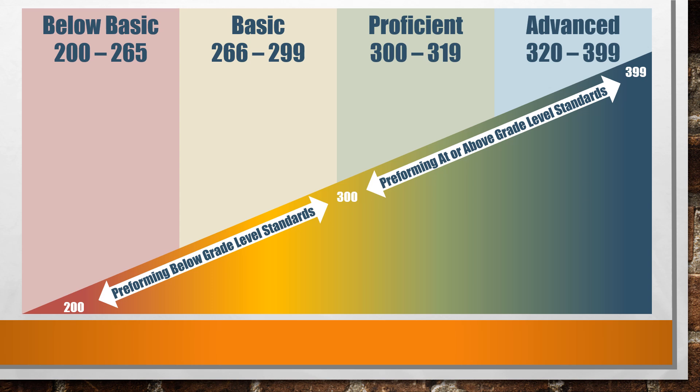Scores on the OSTP fall into four categories ranging from below basic to advanced. Scores below 300 represent students who are most likely performing below grade level standards, while scores of 300 and above represent students who are most likely performing at or above grade level standards.